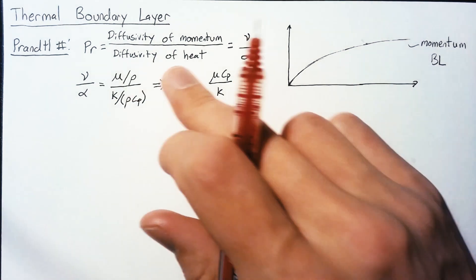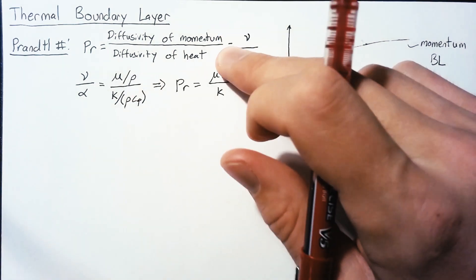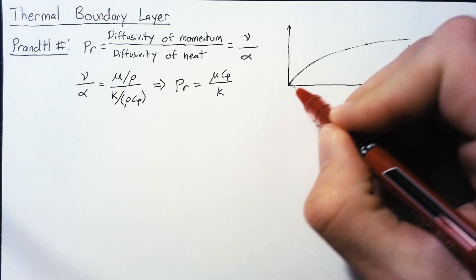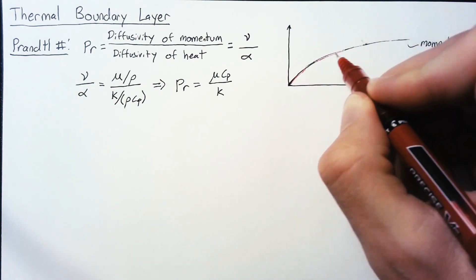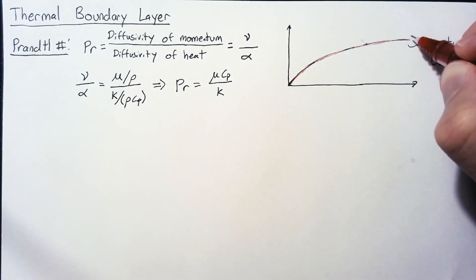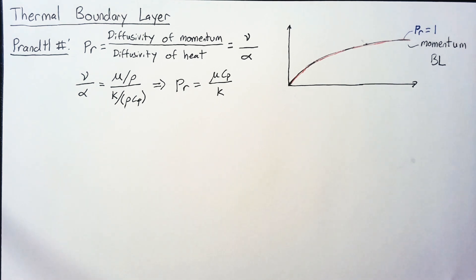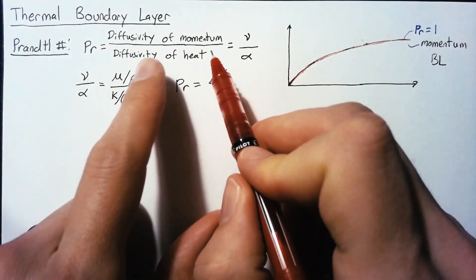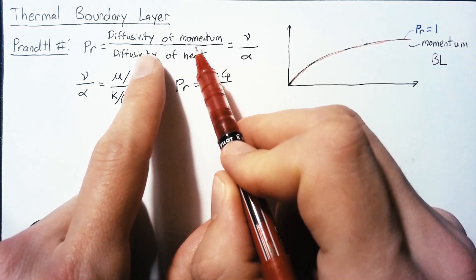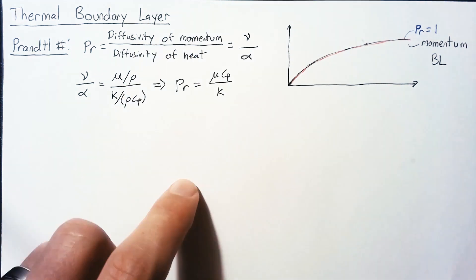If our Prandtl number is 1, then the diffusivity of momentum and heat are the same, and we actually end up with the exact same shape and size. So now what happens if we increase our Prandtl number? If we're increasing our Prandtl number, that means we are increasing the diffusivity of momentum compared to that of heat.